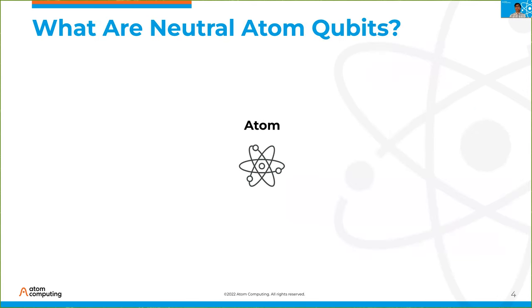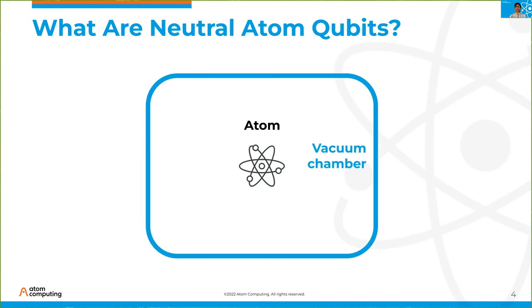Let's talk about what a neutral atom qubit physically looks like. I start with a single atom that I want to be my qubit. First, I protect this atom from its environment by putting it inside a vacuum chamber where the pressure is very low on the inside. This prevents sources of quantum decoherence, like background gas collisions.